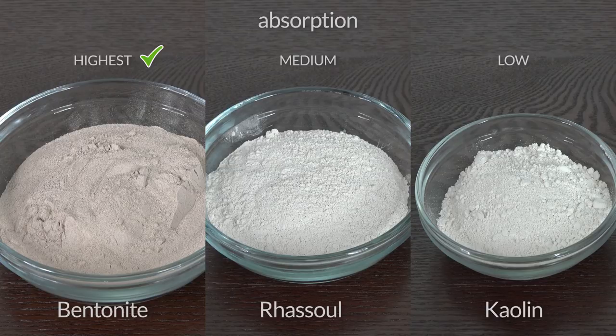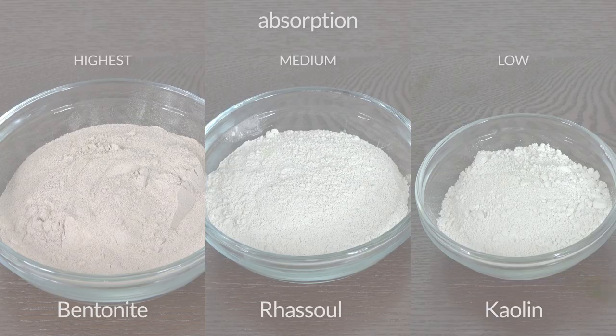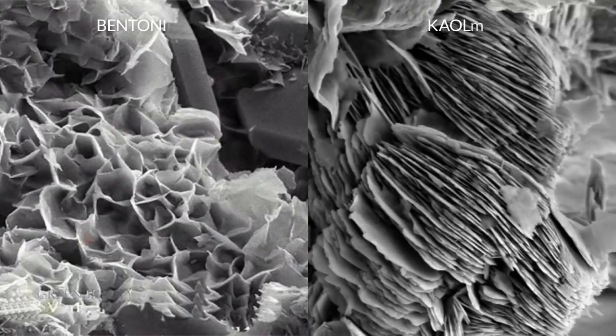As far as absorption rate, bentonite clay scores the highest compared to rasul and kaolin clay. Kaolin clay has very low absorption abilities compared to montmorillonite clays like bentonite.